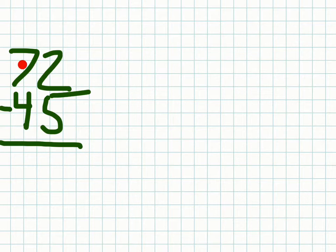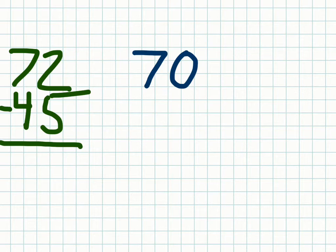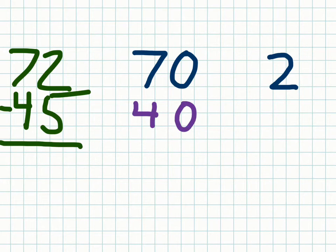The subtraction problem is 72 minus 45, but I'm going to expand these numbers into their columns by place value. I'll start by breaking 72 into 70 in one column and 2 in another column. Then 45 breaks apart into 40 and 5. This shows our understanding of place value.